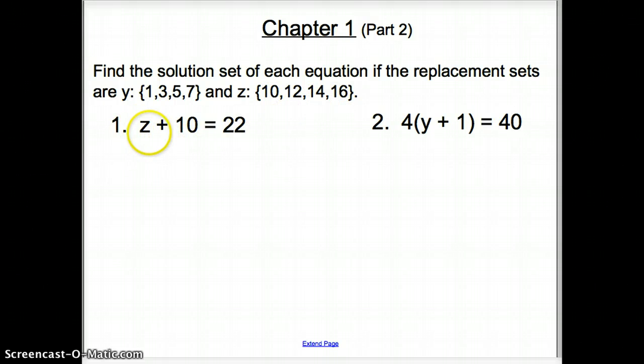If we look at 1, it says z plus 10 equals 22. Well, what data set is z? We want to look at this data set. So we are only going to plug these points in for z. We're not going to do anything with y right now. So we start off with 10 plus 10. Does that equal 22? That equals 20. No, the only data set that we can have that would be correct would be if it equals 22. So 10 does not work.